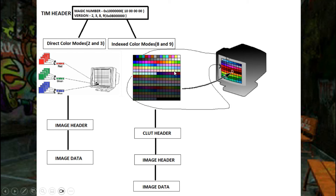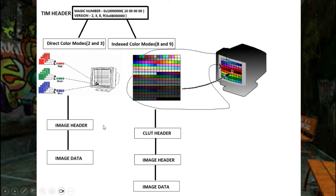The CLUT header describes the palette: its size, how many colors it holds, and how many palettes the TIM image uses. The TIM can hold multiple palettes that the image data can refer to. Then you go to the image header and read the image data. In direct color mode, you skip this intermediary palette layer and go straight to the image header and read the image data.